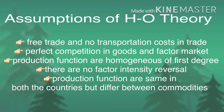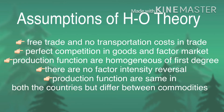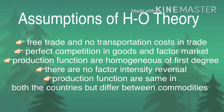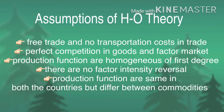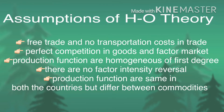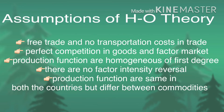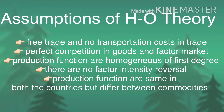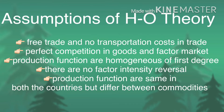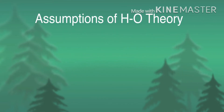The last assumption — that production functions are the same in both countries — is quite a strong one. What it amounts to is assuming that knowledge travels freely; in other words, the best techniques of production in the world are known to everyone. These are the assumptions used in connection with the Heckscher-Ohlin theory of trade. They are necessary to state the meaning of comparative advantage in the 2×2×2 model and to prove the factor price equalization theorem, which we will discuss later.